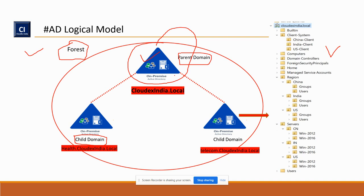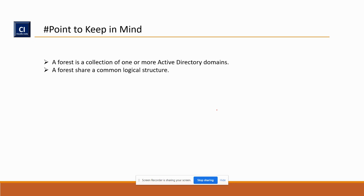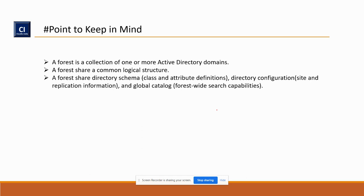These environments are all isolated. The entity of the parent domain stays there, child domain health stays there, and for telecom all entities stay in their own domain. They are co-related through parent-child relationships — they have a relationship, however they are isolated. The OU regions I created for China contain users and groups, but all are related to telecom.cloudxindia.com. There are some important points to keep in mind: a forest is a collection of one or more Active Directory domains. A forest always shares a common logical structure.